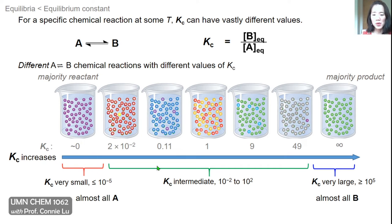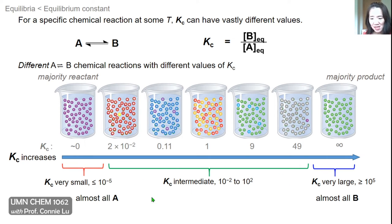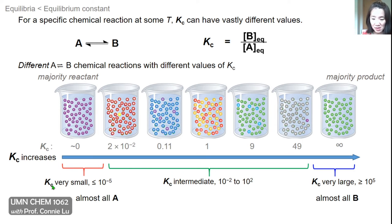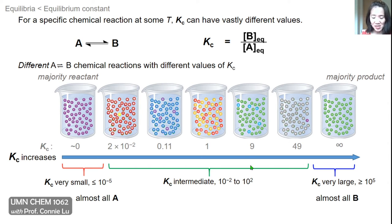It's useful to think about Kc values in three categories. First, when Kc is very small — less than 10^-5 — the reaction mixture at equilibrium is almost entirely reactant A. When Kc is very large — greater than 10^5 — the equilibrium mixture is almost entirely product B. In the intermediate range, both A and B are present at equilibrium, even if one is a majority.